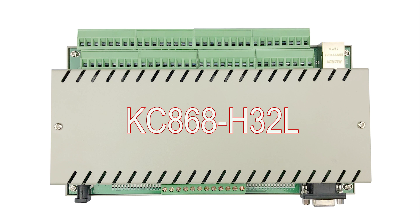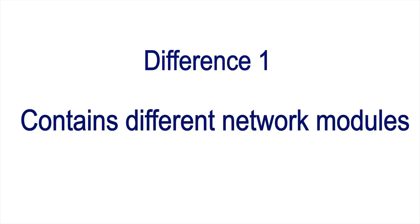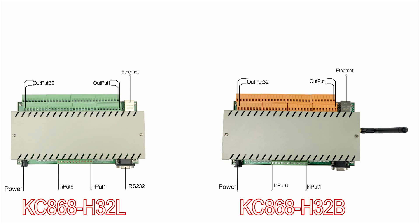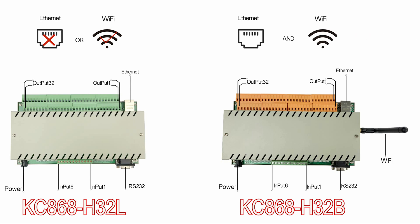Today we will introduce the difference between H32L and H32B. Difference 1: they contain different network modules. They both have 32 relay outputs, 6 inputs, and 1 serial port. But the H32B includes both Ethernet and Wi-Fi modules and can use them at the same time. The H32L can only work with Ethernet or Wi-Fi, but cannot use both simultaneously.